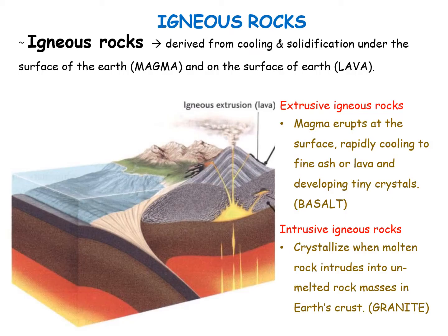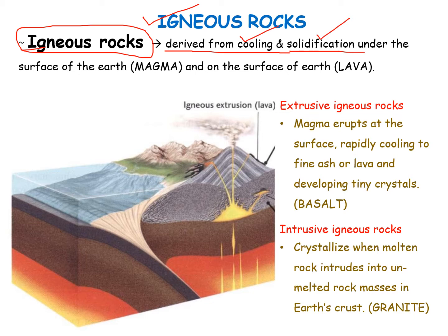So first, what is igneous rock? These are the rocks that are derived from the cooling and solidification of magma under the surface of earth, as well as on the earth that is lava. The cooling and solidification occurs of magma as well as lava. Magma is inside the surface of the earth while lava is outside the surface of the earth.